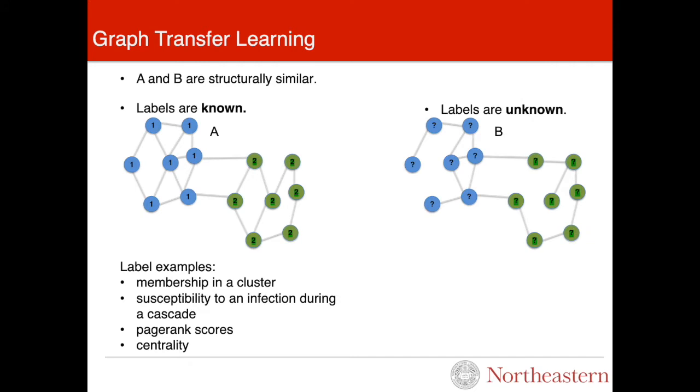We know the labels on Graph A, but we don't know the labels on Graph B. Node labels such as community membership, susceptibility to an infection, and centrality may be functions of structural properties of a node, and as a result, may be transferable across graphs. Our goal is to use the labels on Graph A to predict the labels on Graph B.